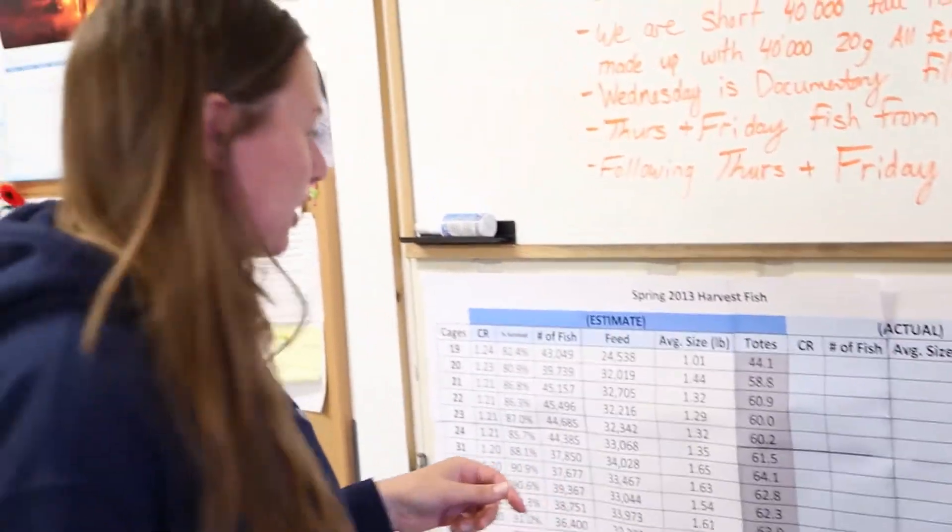We ship fish around two and a half to three pounds. These fish we're shipping a little bit earlier just because some of the fish up north are a little bit small because we had a pretty cold winter this year.